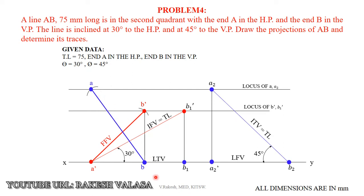Join A and B to get the final top view. We know that any corresponding front view and top view points lie on the same vertical projector. For example, point A: its front view A dash and top view point A both lie on the same vertical projector. Similarly, B dash and B both lie on the same vertical projector. This is the final solution for problem number four.